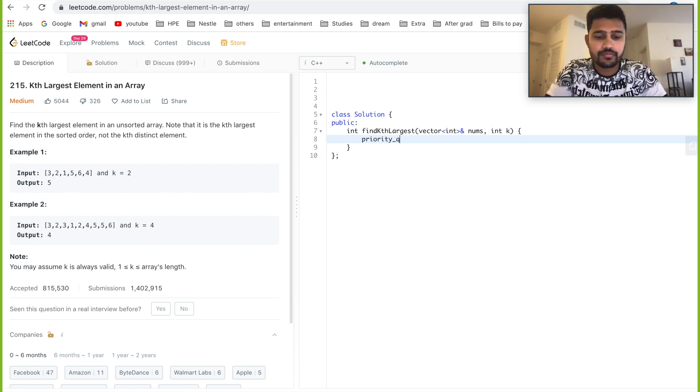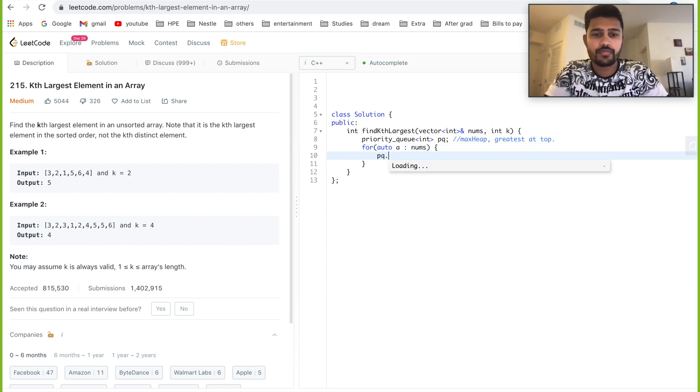Let's define our priority queue. By default, it's always max heap in C++ which means the greatest element will be at the top. Now we need to basically insert all the elements, so do auto a in numbers. I have inserted all the elements. Now I need to pop all the k minus 1 terms, and then the top element will be the kth largest element. So it's quite simple code if you know the concept of priority queue.